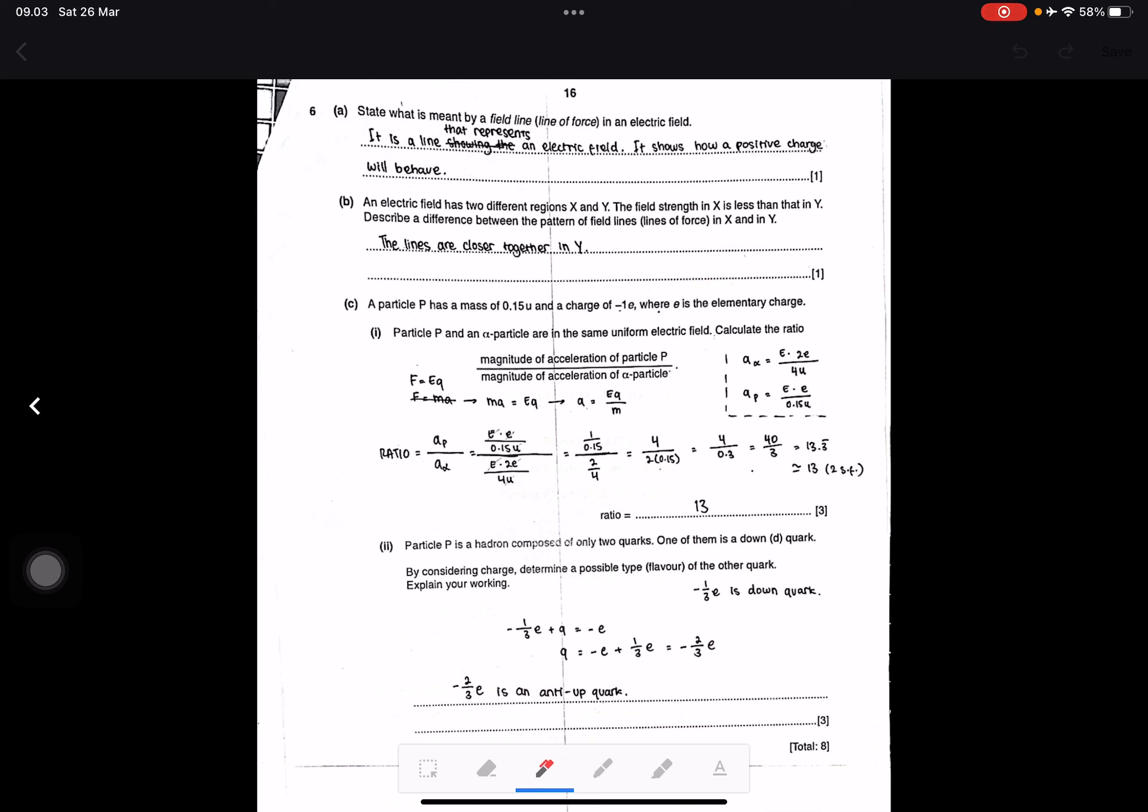Last one, number six. The direction of an electric field is the direction in which a positive charge will behave. Question B: An electric field has two different regions X and Y. The field strength in X is less than that in Y. Describe the difference between the pattern of lines of force in X and Y. Lines close together in Y, further apart in X. Yes.